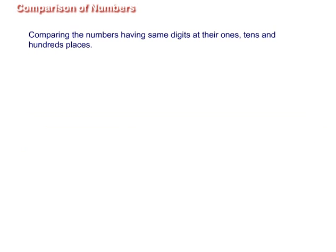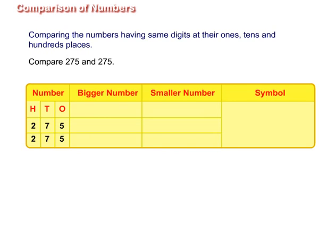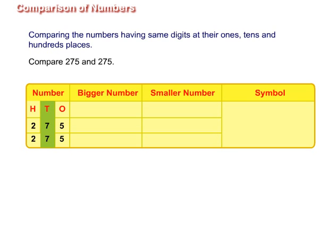Comparing numbers having the same digits at their ones, tens, and hundreds places. Compare 275 and 275. In these two three-digit numbers, both have two in their hundreds place, seven in their tens place, and five in their ones place. Therefore, we can say that both numbers are equal. That is, 275 is equal to 275.